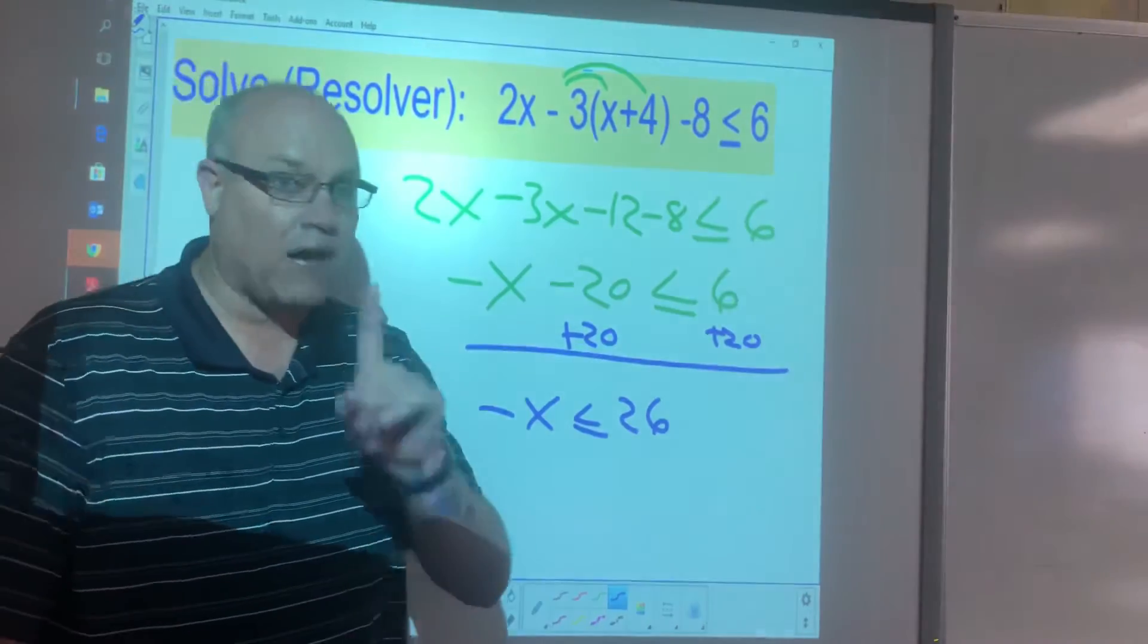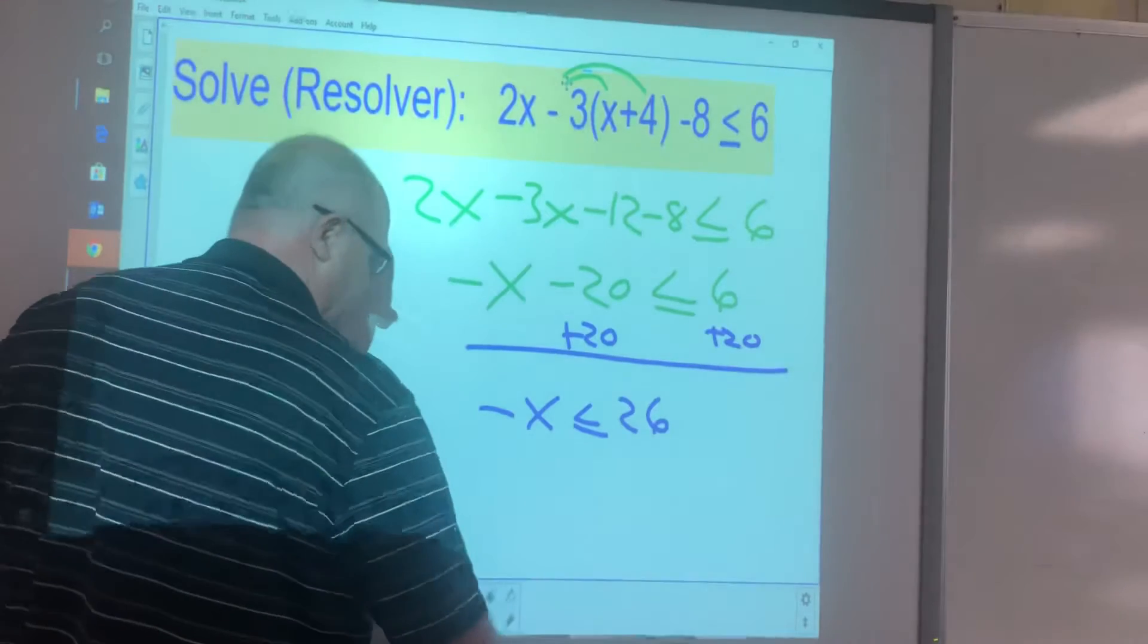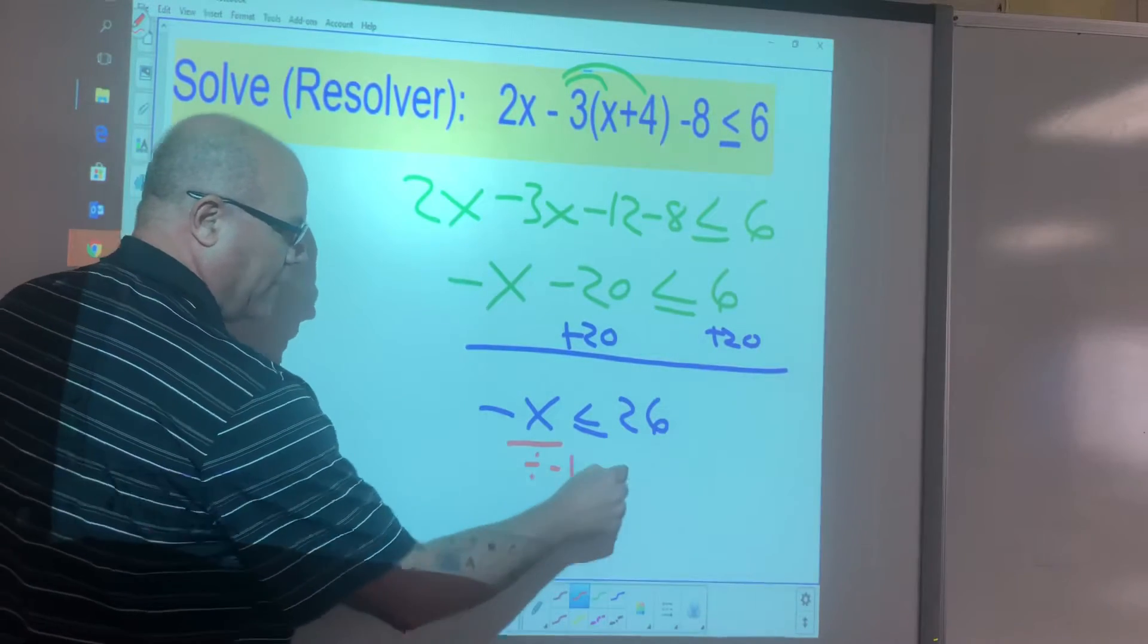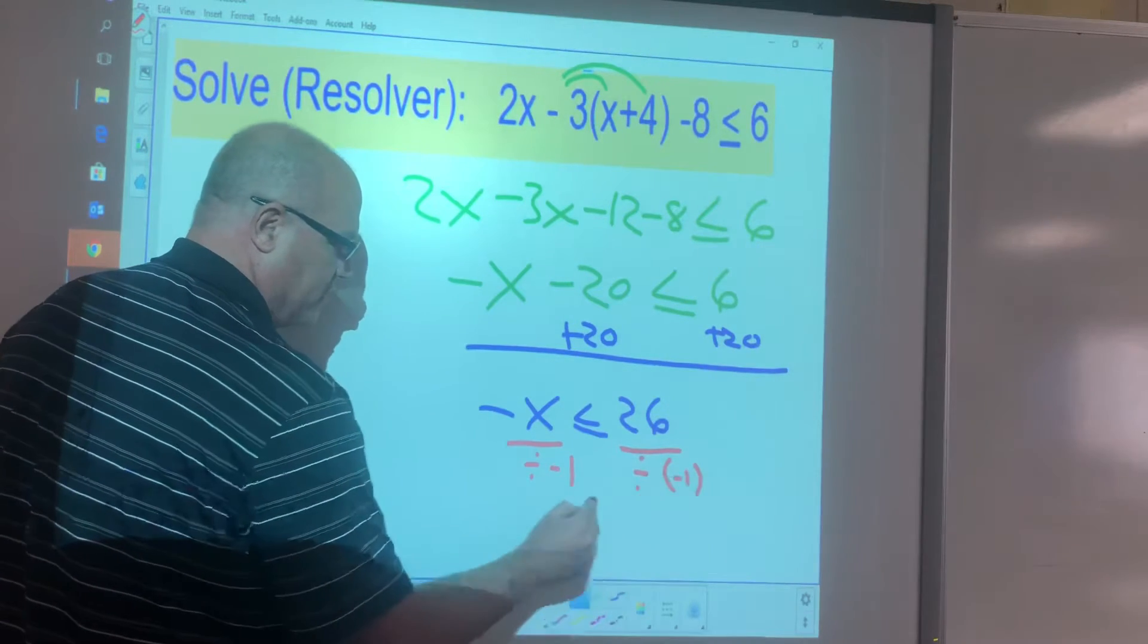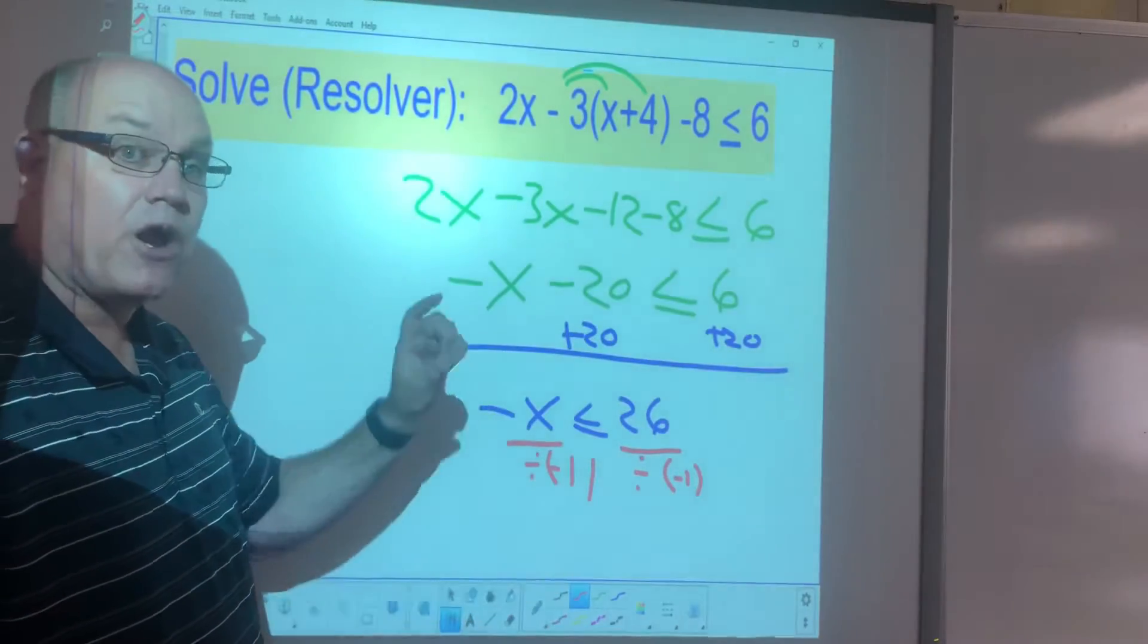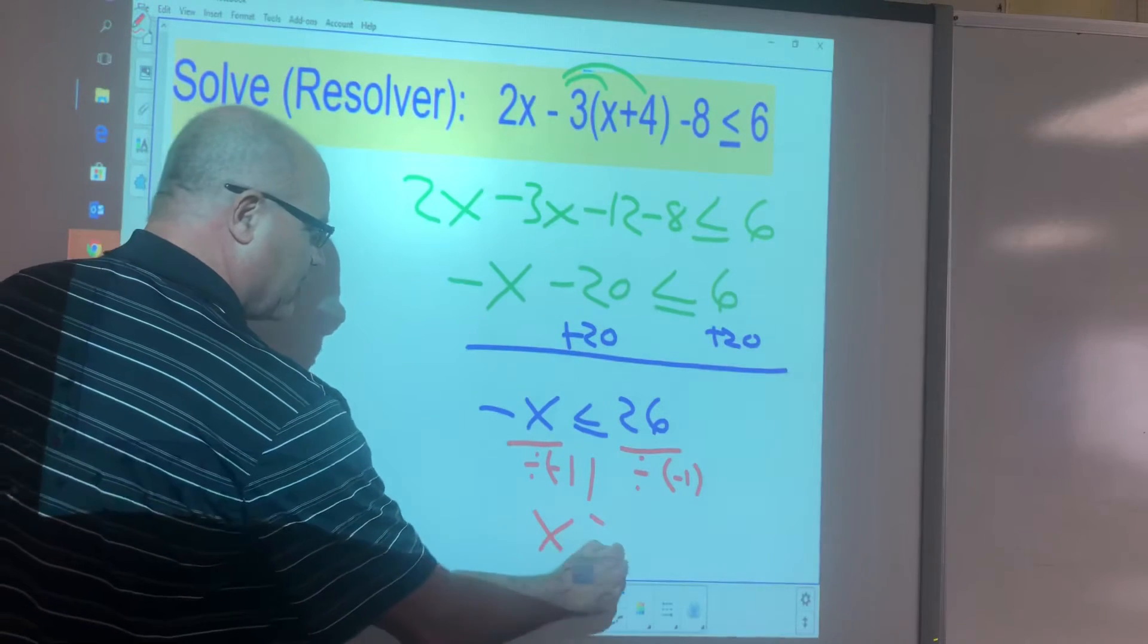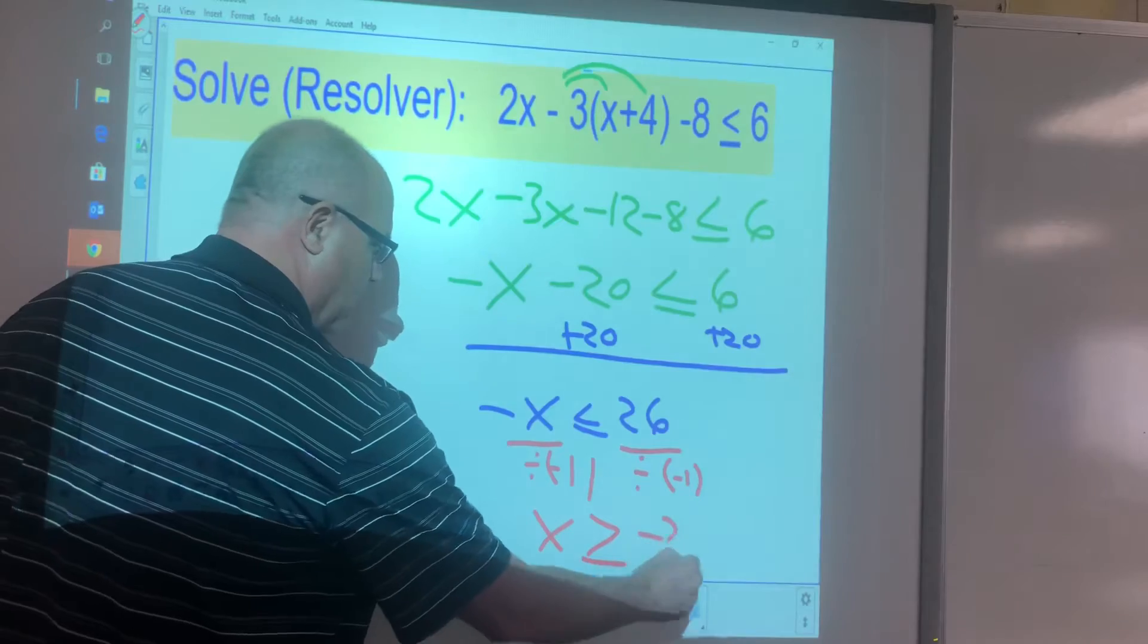I don't want negative x, I want 1x. So what are we going to do now? We are going to divide both sides by negative 1. You could also say you were going to multiply by negative 1 both sides, that would work as well. Again, if we multiply or divide both sides by negative, we are going to flip the sign. So this becomes x is greater than or equal to negative 26.